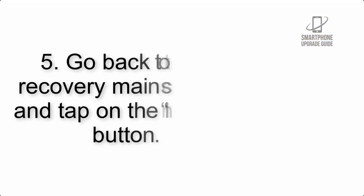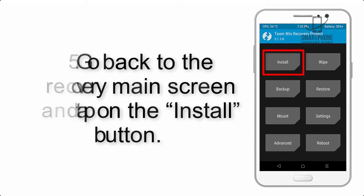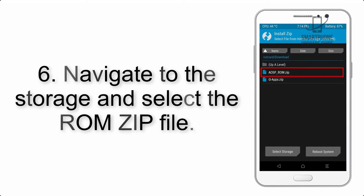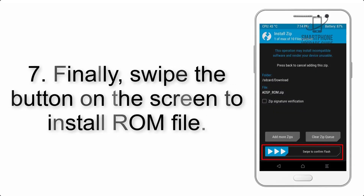Step 4: Swipe the button to wipe the device. Step 5: Go back to the recovery main screen and tap on the Install button. Step 6: Navigate to the storage and select the ROM zip file.